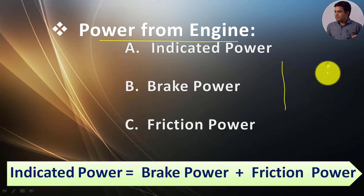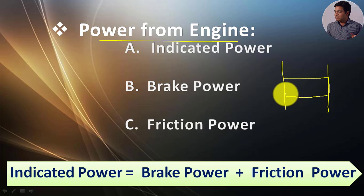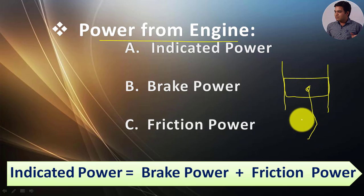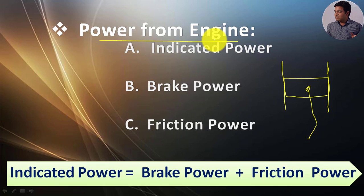Now, if we consider this is the cylinder and here is the piston arrangement, then we can understand with the help of this small figure these three powers. We are very well aware with the four-stroke engine process which comprises four processes: suction, compression, expansion or power stroke, and the exhaust stroke. With reference to these processes, I am going to explain these powers in a brief manner.